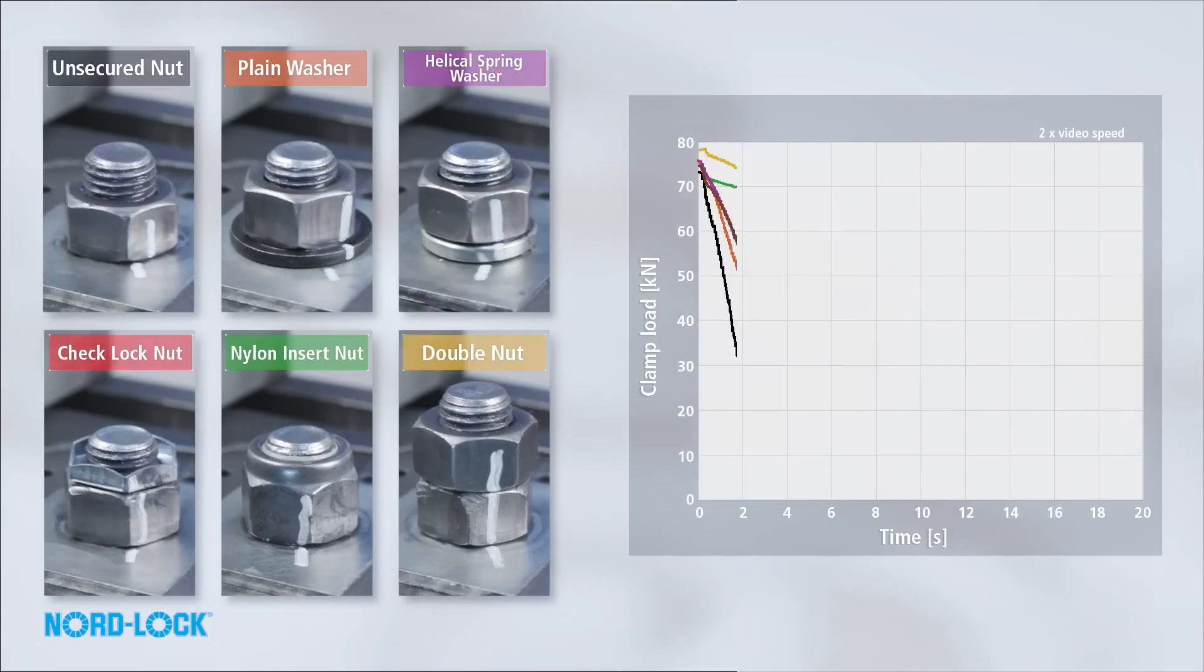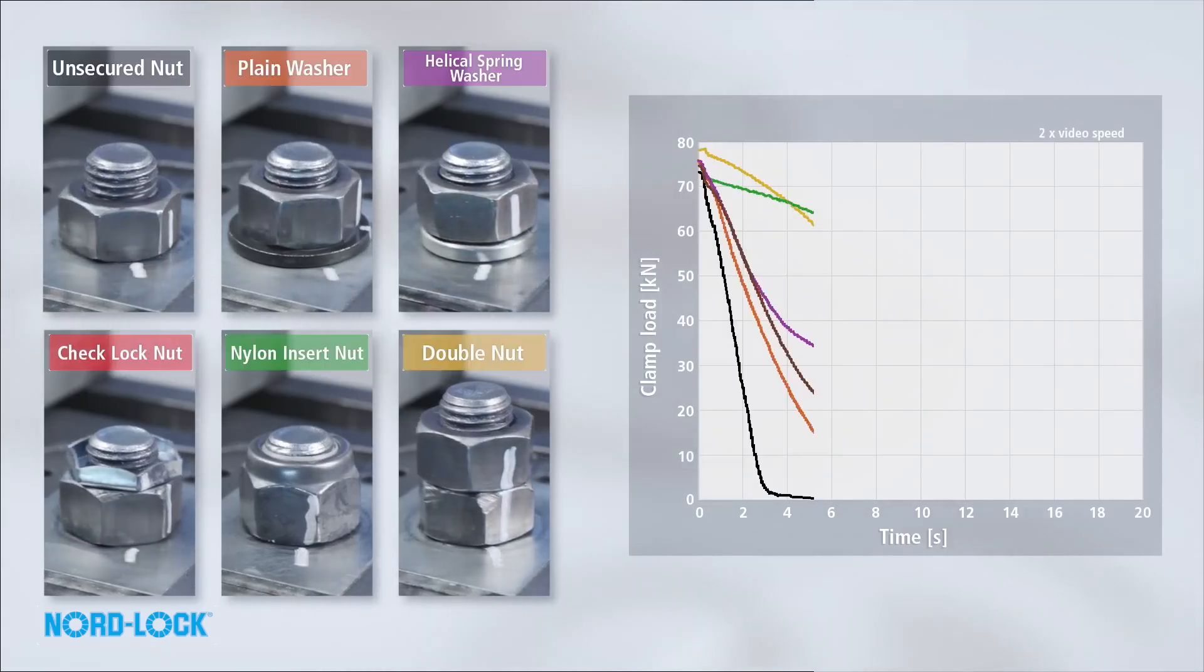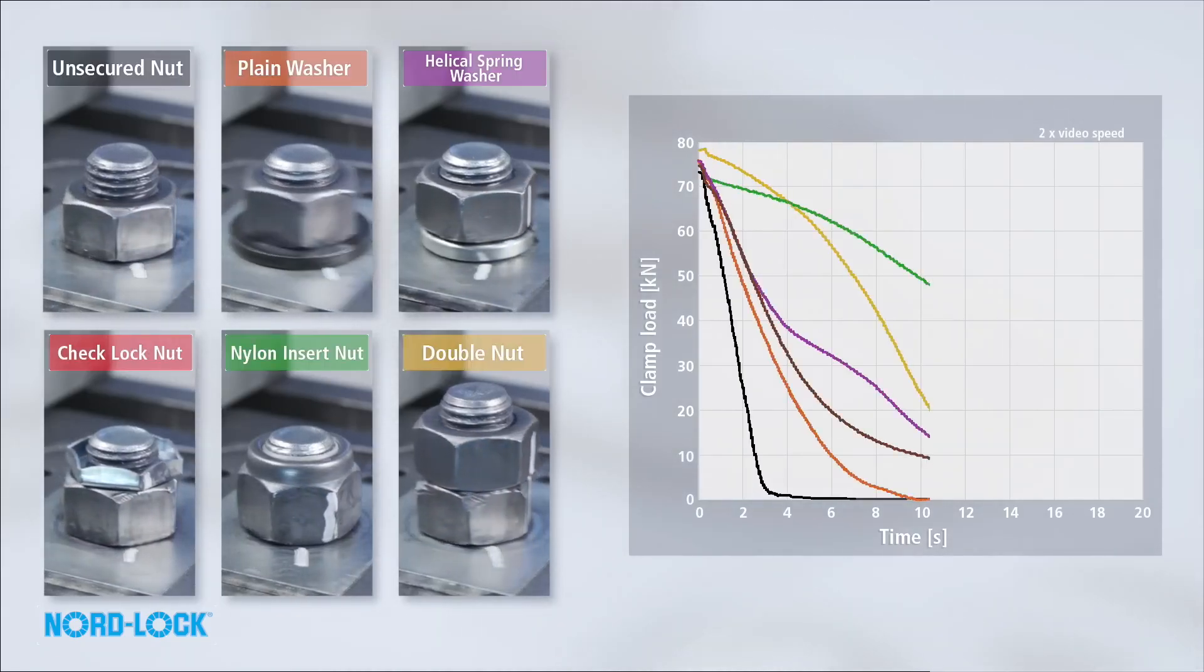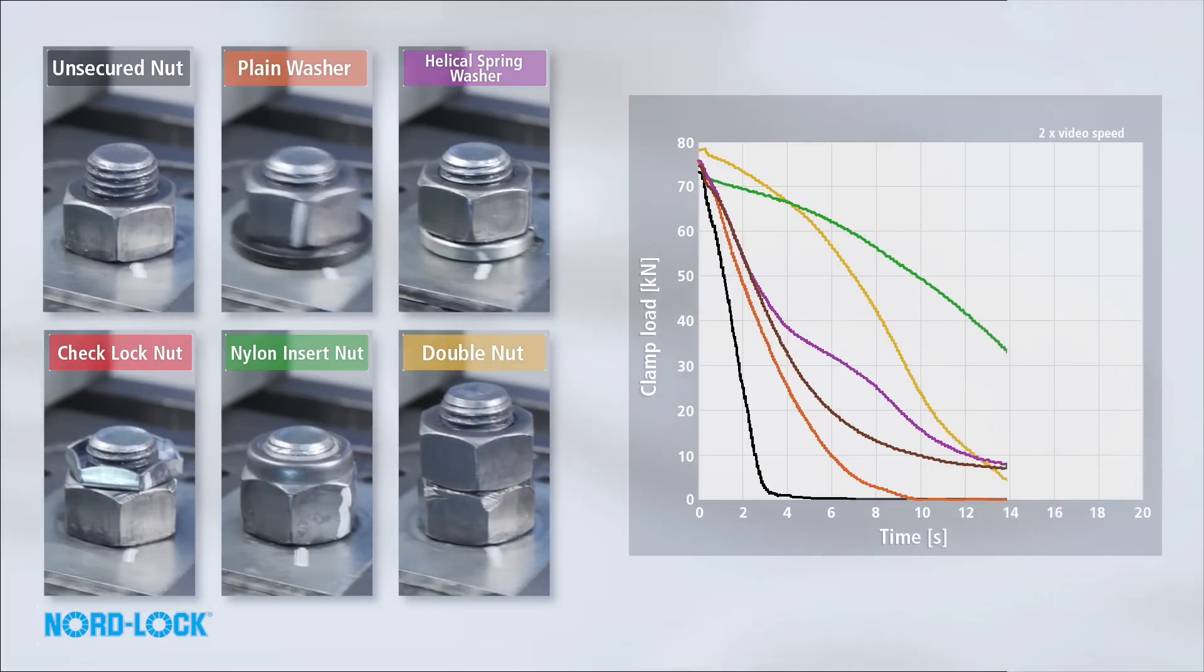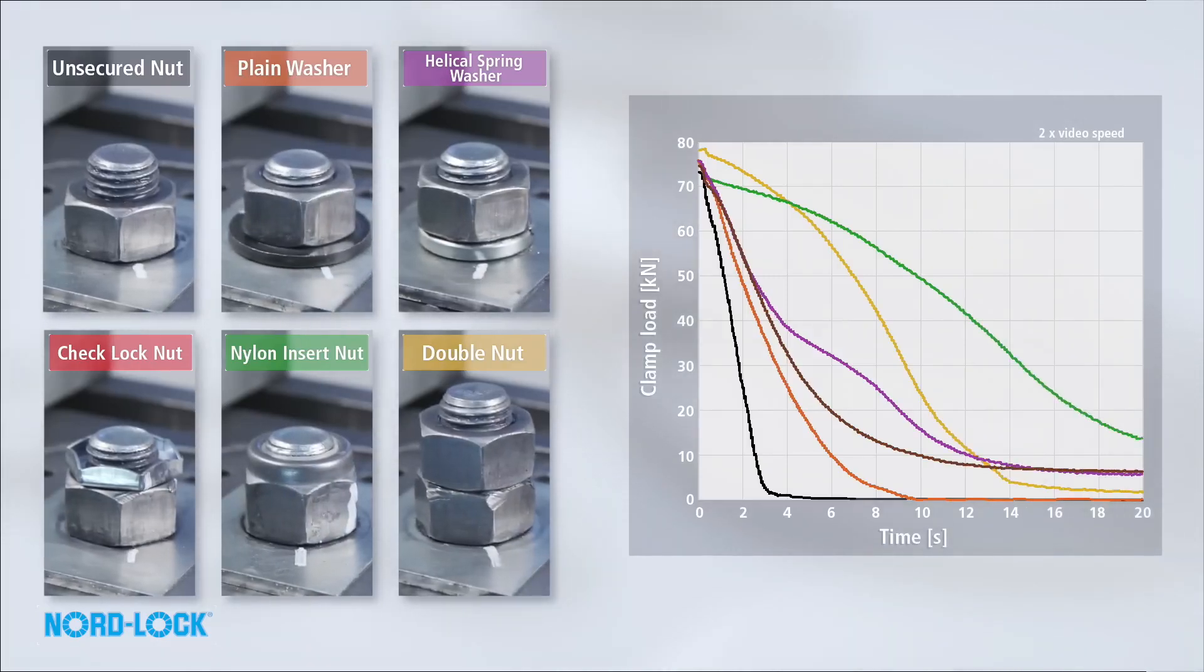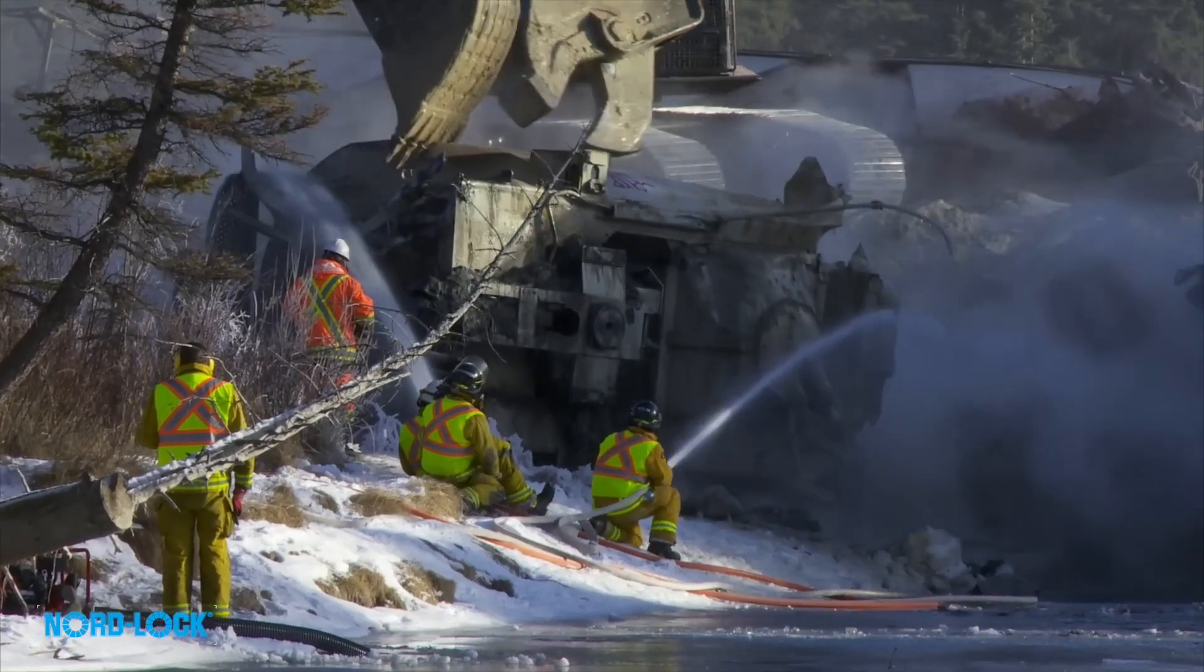All these solutions have in common that they rely on friction to secure the bolted joint. As friction is not a reliable locking method, the bolts will need to be re-tightened at regular intervals to prevent costly downtime or, potentially, an accident.